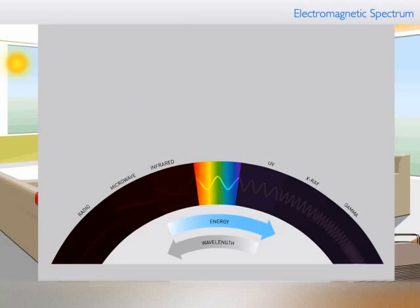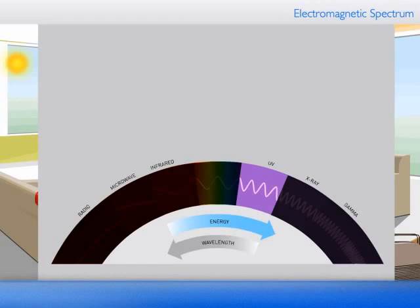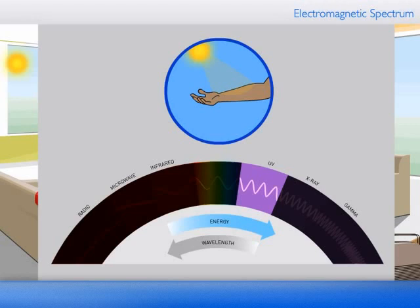At lower wavelengths, we have the ultraviolet region. The longer wavelengths in this ultraviolet range are part of the radiation we receive from the sun and are considered beneficial, UVA. They result in tanning of the skin.